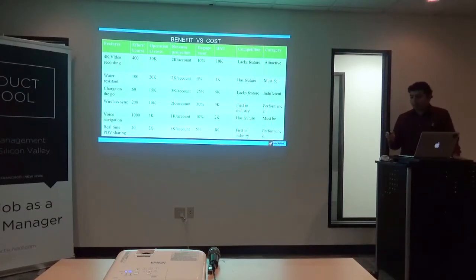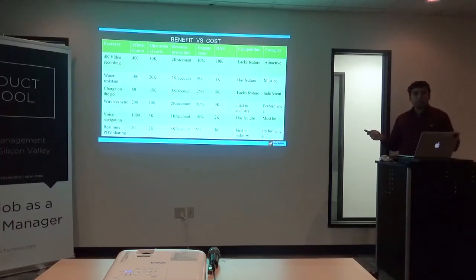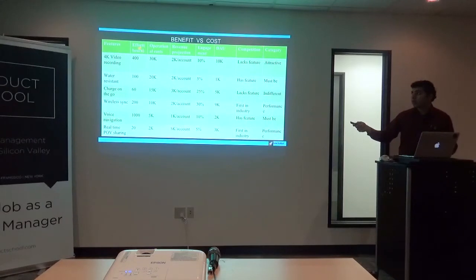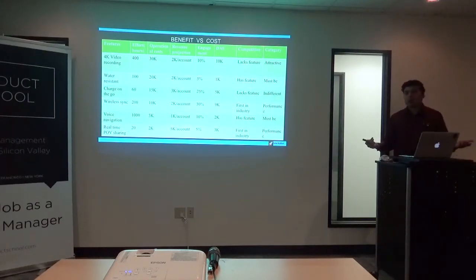For the same 4K product, you could create a matrix where you have the features on the extreme left-hand side and then look at various buckets. First, the number of engineering hours required to deliver each feature — because that's related to your headcount cost. You could have the greatest idea on earth, but if it means increasing your headcount by 20 people, it might work for a large company but not a bootstrapped startup. Then there will be operational costs like cloud space rental, contracting out UI/UX design, contracting out DevOps work, and servers.